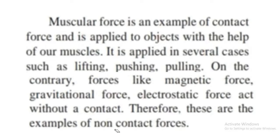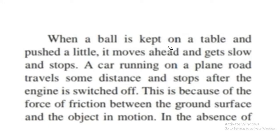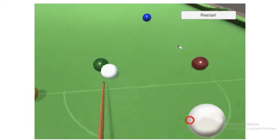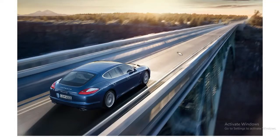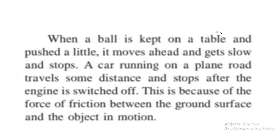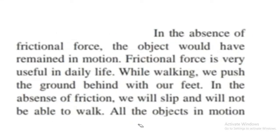When a ball is kept on a table and pushed a little, it moves ahead and gets slow and stops. A car running on a plain road travels some distance and stops after the engine is switched off. This is because of the force of friction between the ground surface and the object in motion. In the absence of frictional force, the object would have remained in motion.